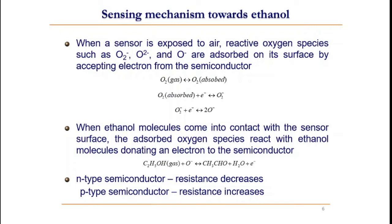Depending upon the type of semiconductor, if the type of semiconductor is N-type, the resistance decreases. If the type of semiconductor is P-type, the resistance increases.